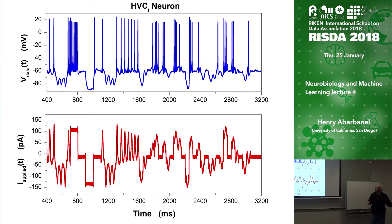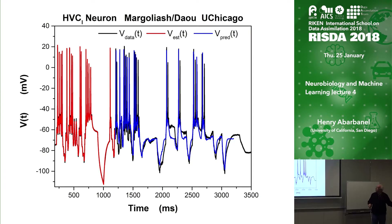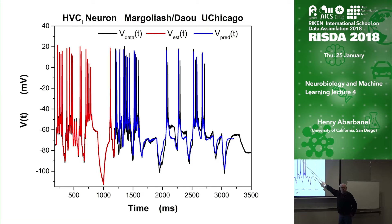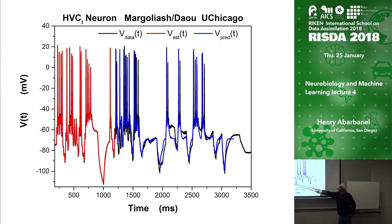Here's a different neuron, again from Dan's lab. This is the current that we use and this is the voltage response. Here is the data — this is the estimation made in the window in which we're making observations. We went through the whole procedure described, found the optimal path for voltage, currents, and so forth through the neuron. You can see that in the estimation window the match with the data in black is not surprising — it's very good.